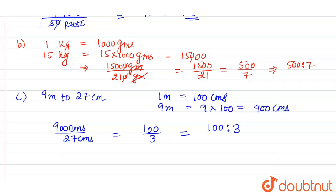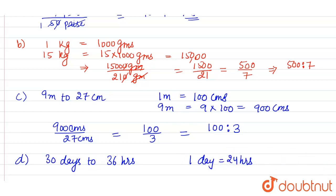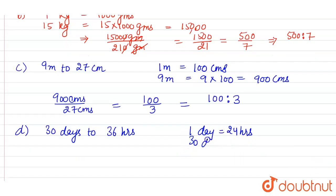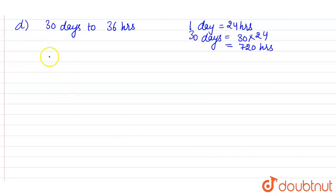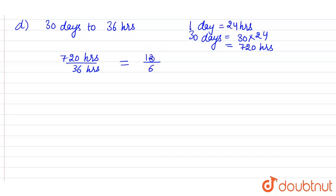For part (d), we have 30 days to 36 hours. We know 1 day = 24 hours, so 30 days = 30 × 24 = 720 hours. Now the ratio is 720 hours ÷ 36 hours. Dividing both by the common factor 6 gives 120 ÷ 6 = 20, so the ratio is 20 ratio 1. This is the required answer.